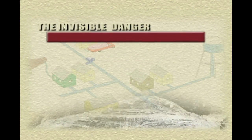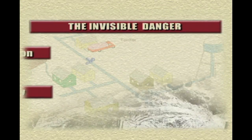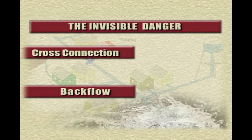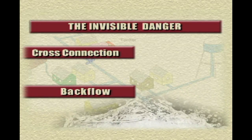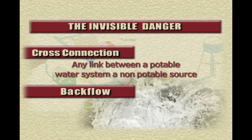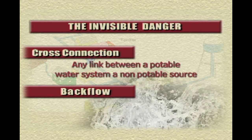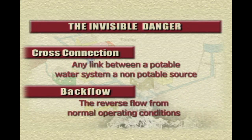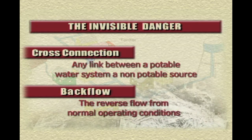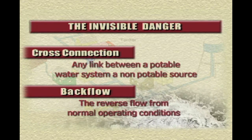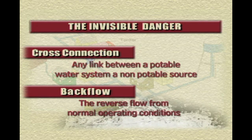We're going to begin by understanding two important concepts: cross-connection and backflow. Cross-connection is a link between a potable water system and a non-potable source. Backflow is the reverse flow from normal operating conditions. Let's take a closer look at these two concepts.